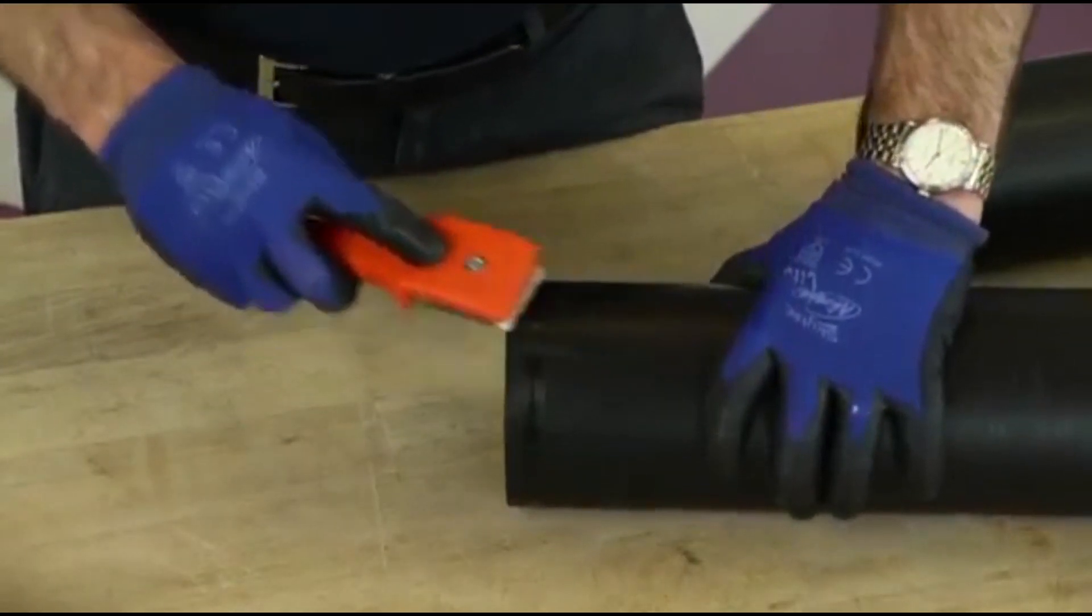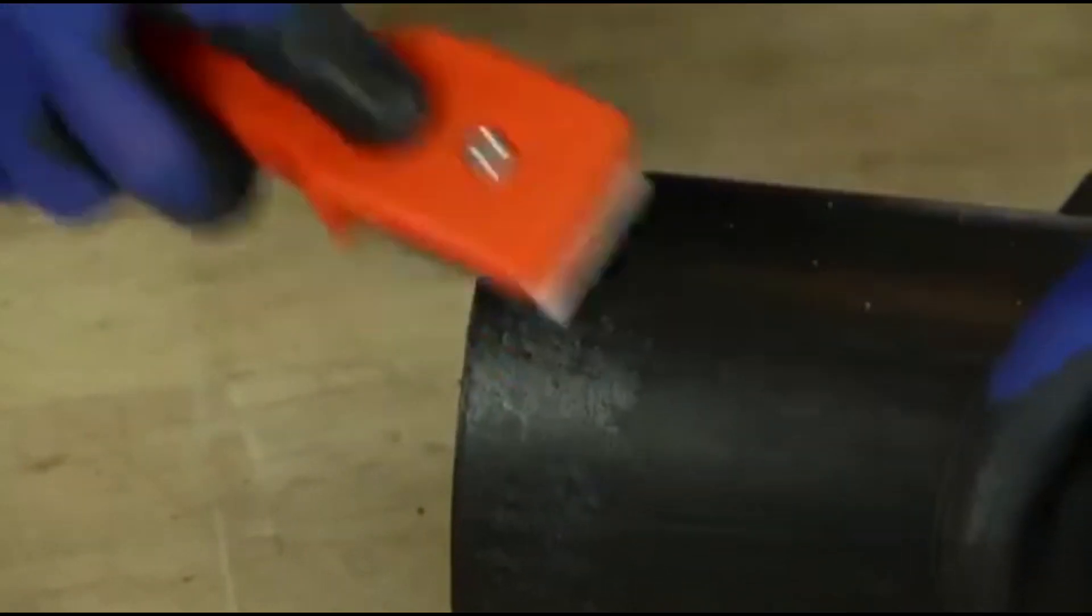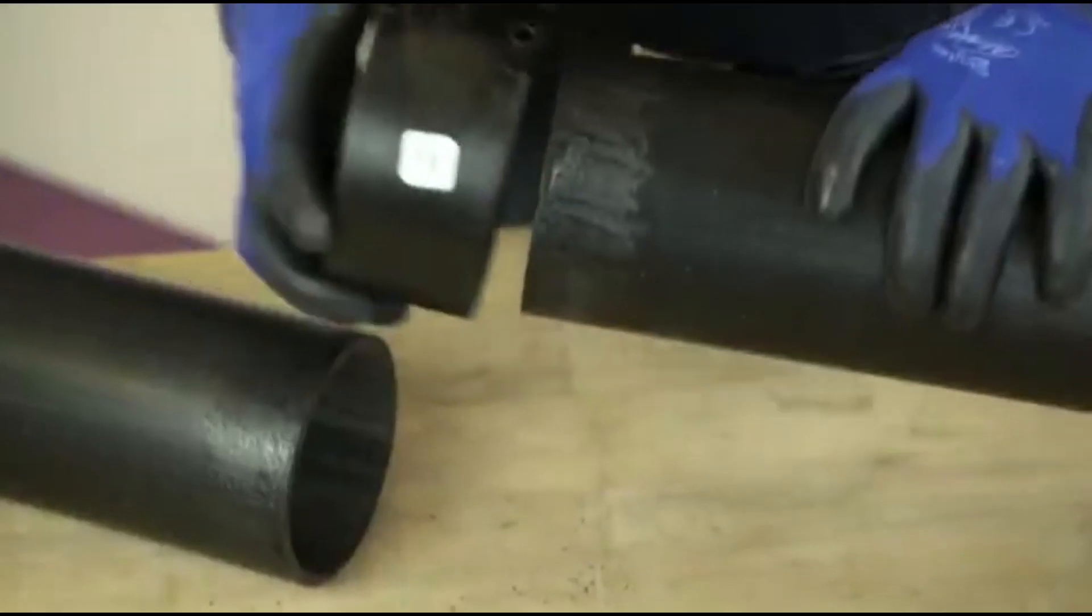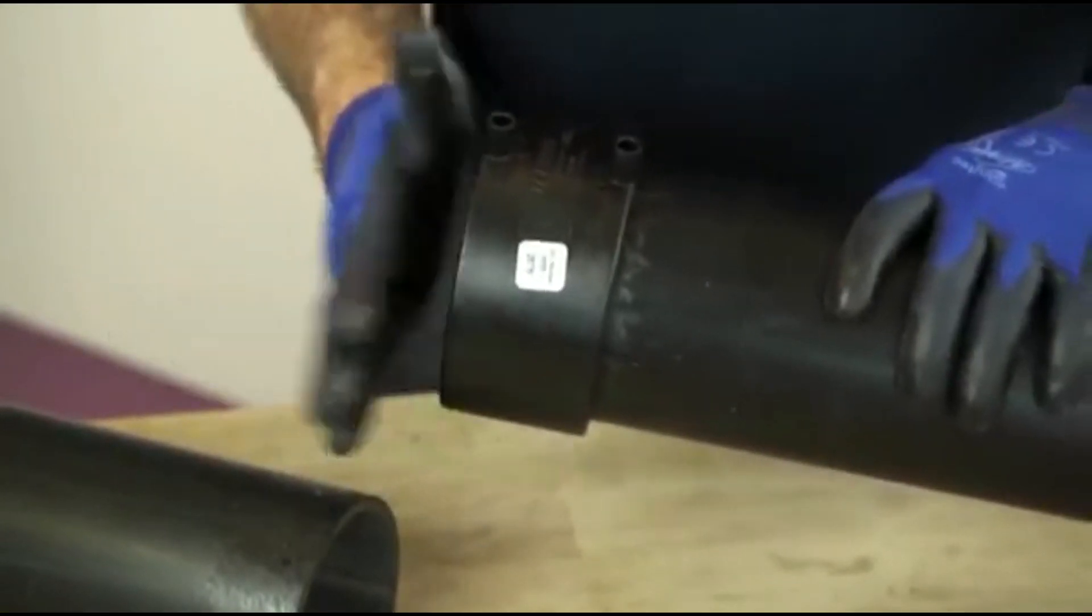Next, scrape the surface to make sure there are no traces of oxidization that could affect the electro fusion process. Then, insert the pipe into the electro fusion coupler.